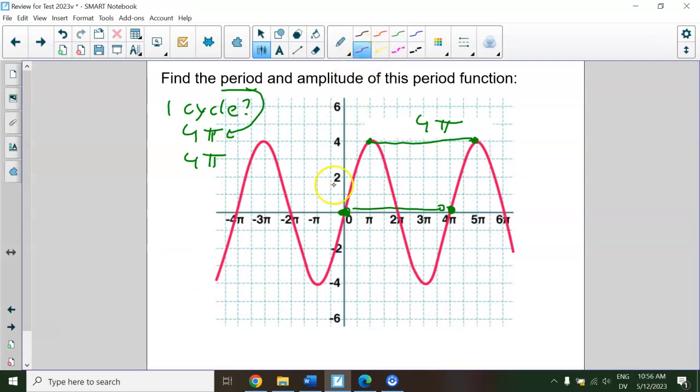Amplitude is half the height. So what I would recommend doing here is just say the lowest value is negative 4 on the y-axis, and the highest is positive 4. And so our height is 8. So our amplitude is half of that. So we're going to do one-half of 8, which is 4. So our amplitude here is 4. Hopefully those are pretty straightforward. Period is how long for one cycle, amplitude is half the height.